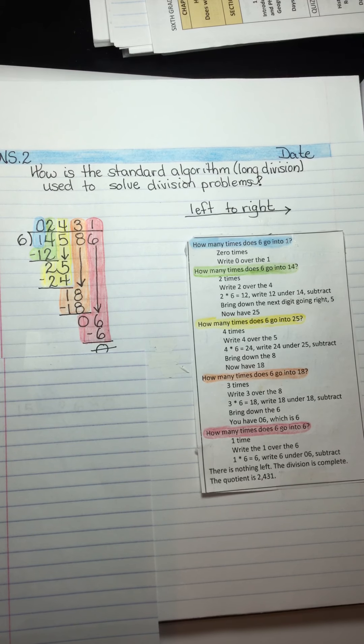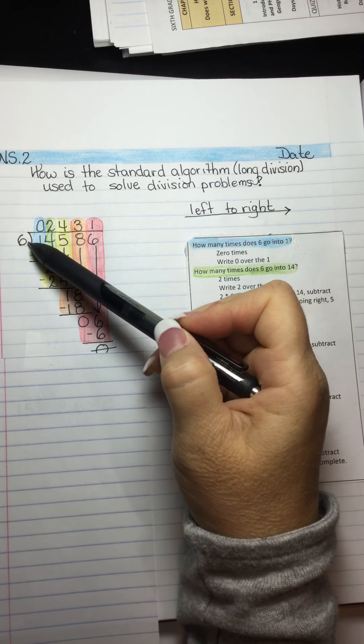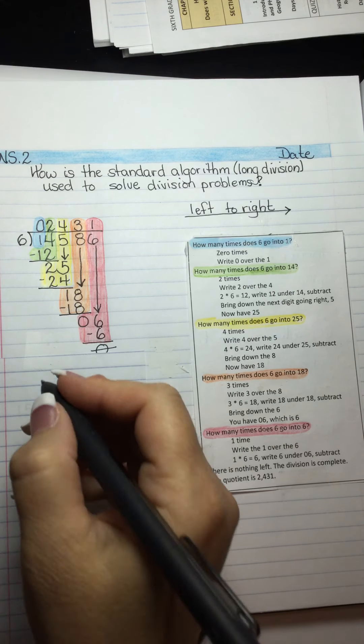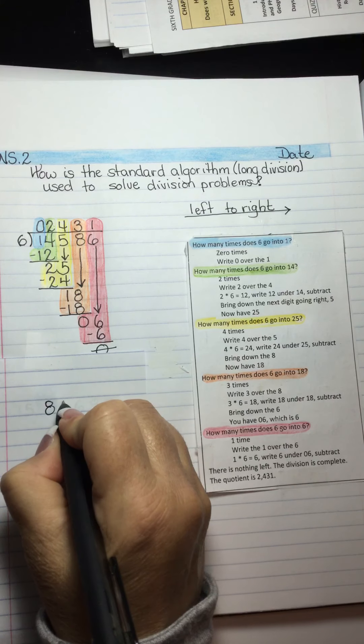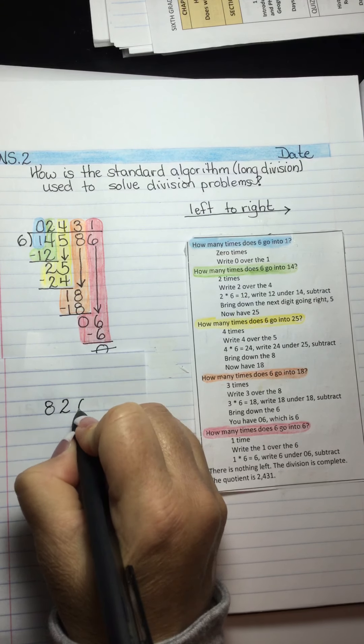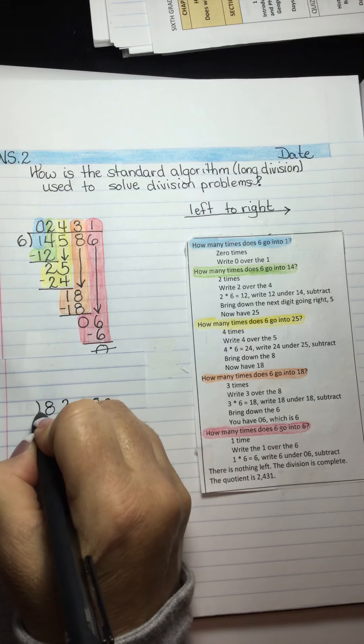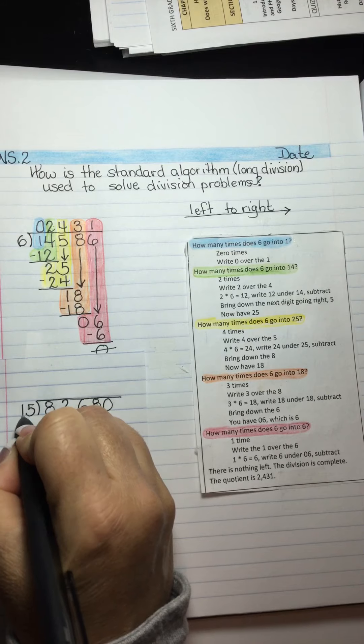In this video, we're going to take a look at doing a two-digit divisor. In this example, we had one digit as our divisor. And the number we're going to start with is 82,680, and we're going to divide that into 15 different parts.